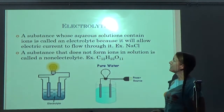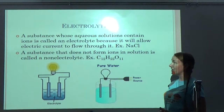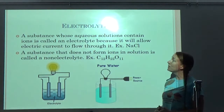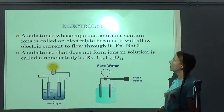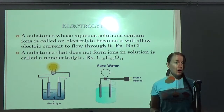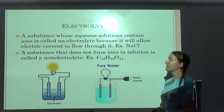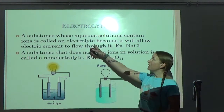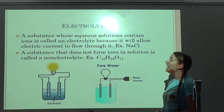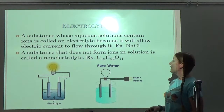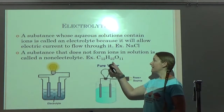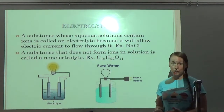A substance whose aqueous solutions contain ions is called an electrolyte, because it will allow electric current to flow through it. An example is salt — when it's aqueous, so you have salt water, it will conduct electricity. Anything that conducts electricity is called an electrolyte. A substance that does not form ions in solution is called a non-electrolyte. An example is sucrose, or sugar.